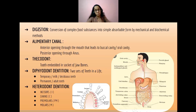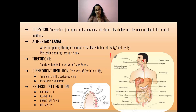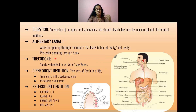The food passes through this alimentary canal throughout. The anterior opening of the alimentary canal is through the mouth, leading to the buccal cavity or oral cavity, and the posterior end opens through the anus. Thecodont refers to the type of attachment where the tooth is embedded into the socket of the jaw bone.